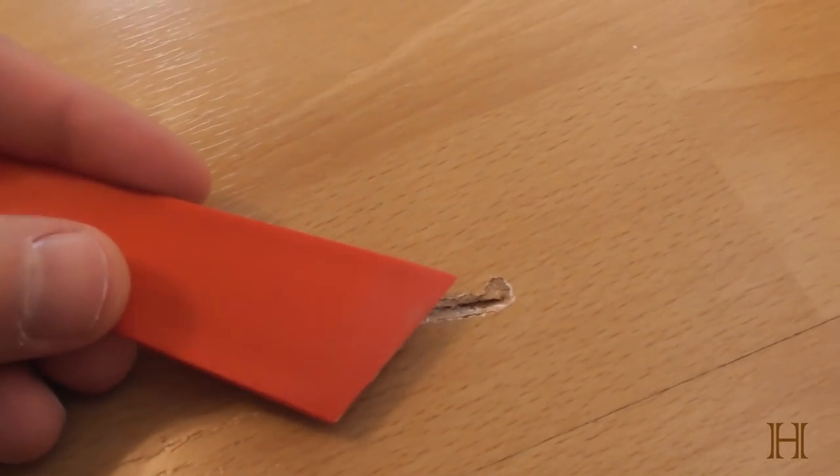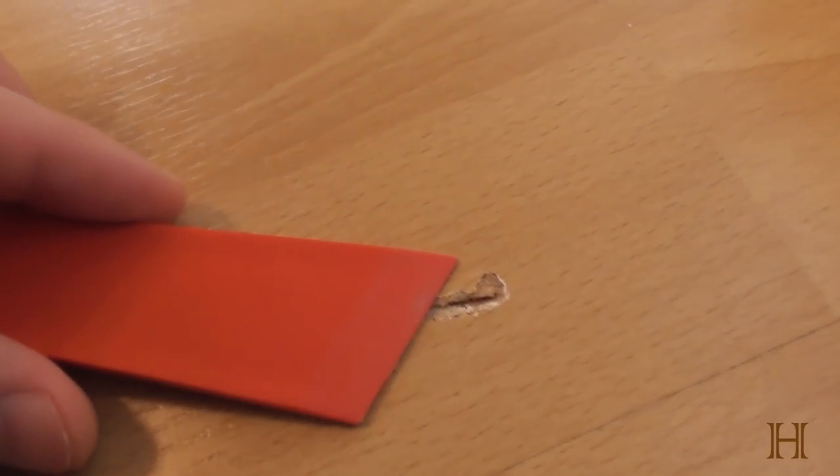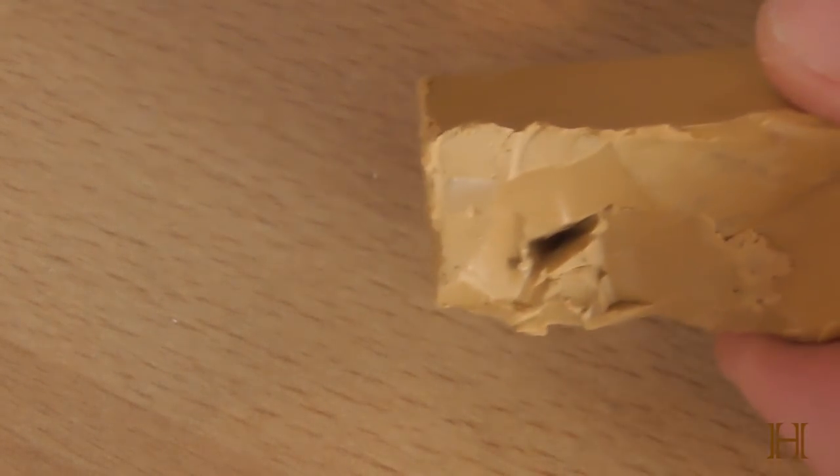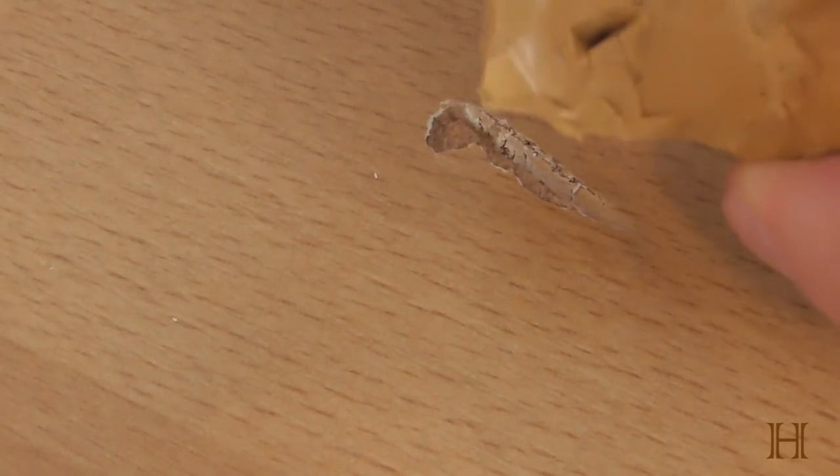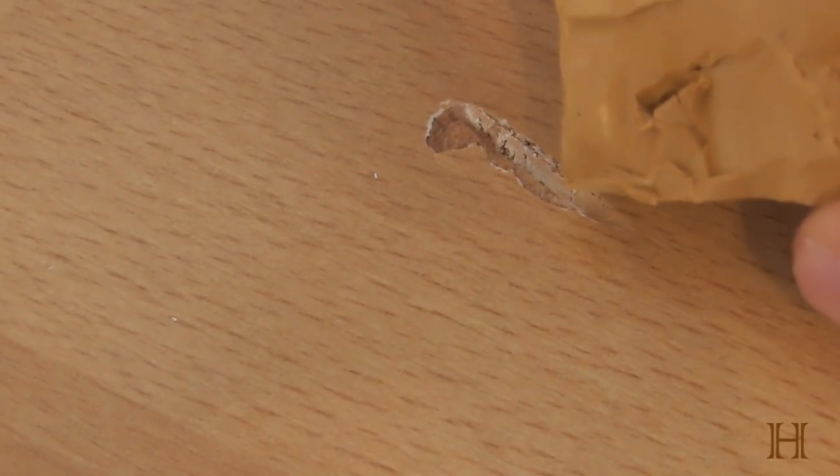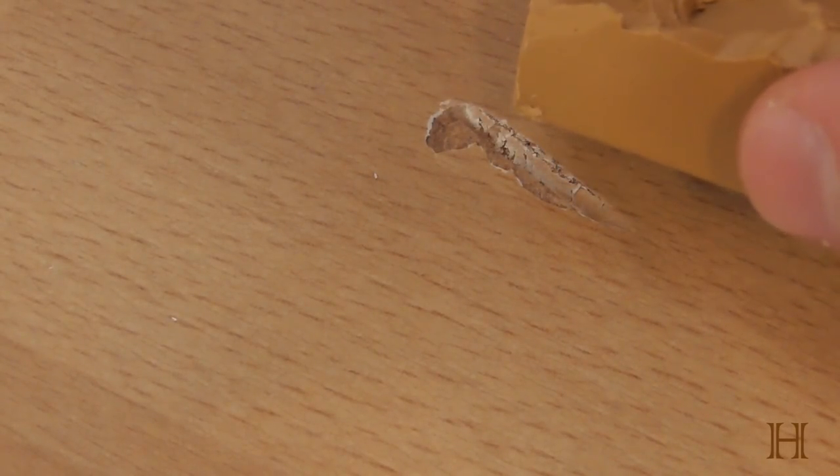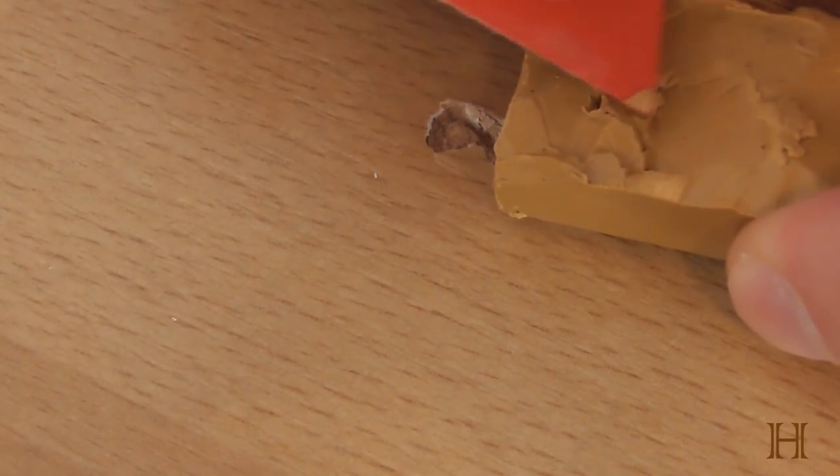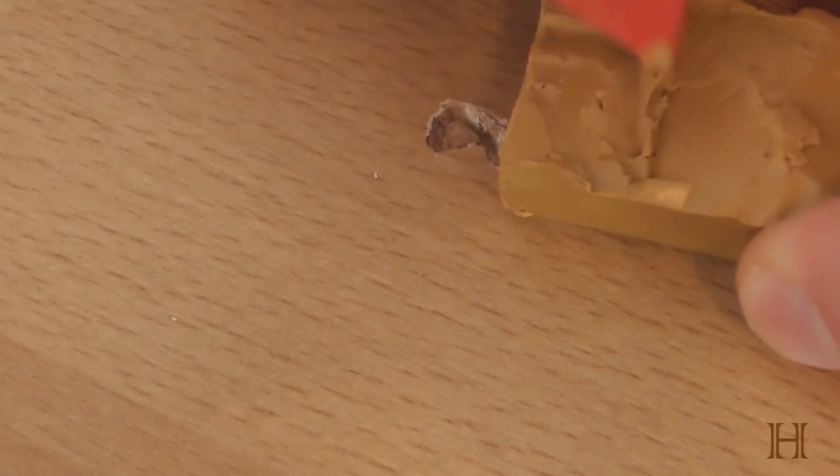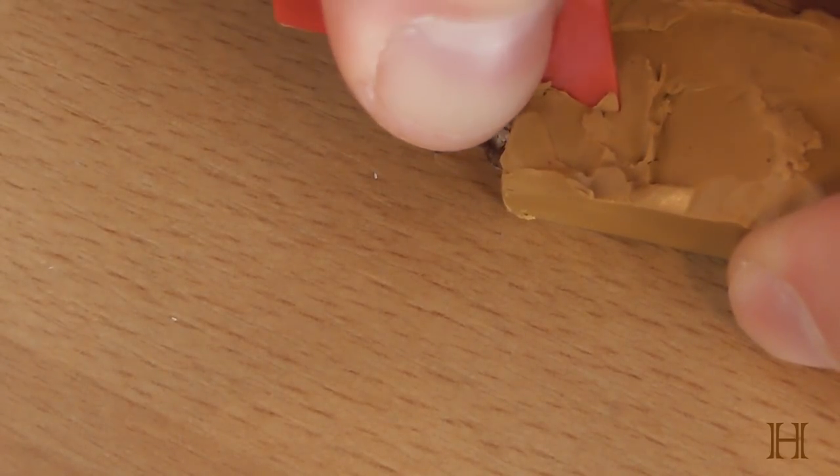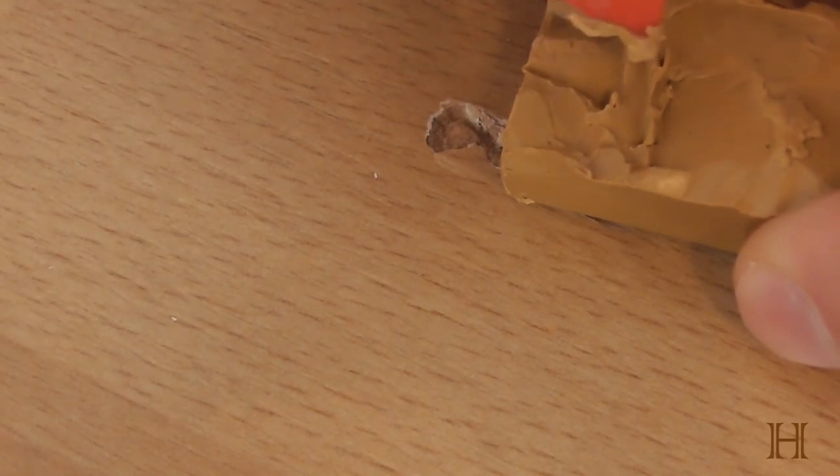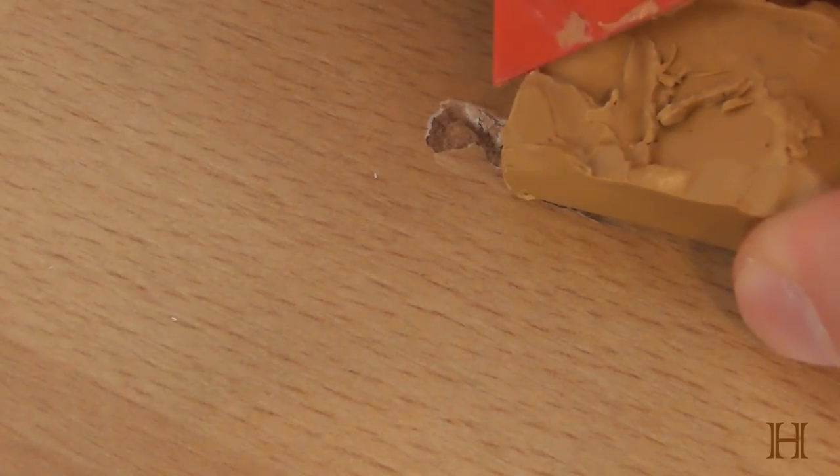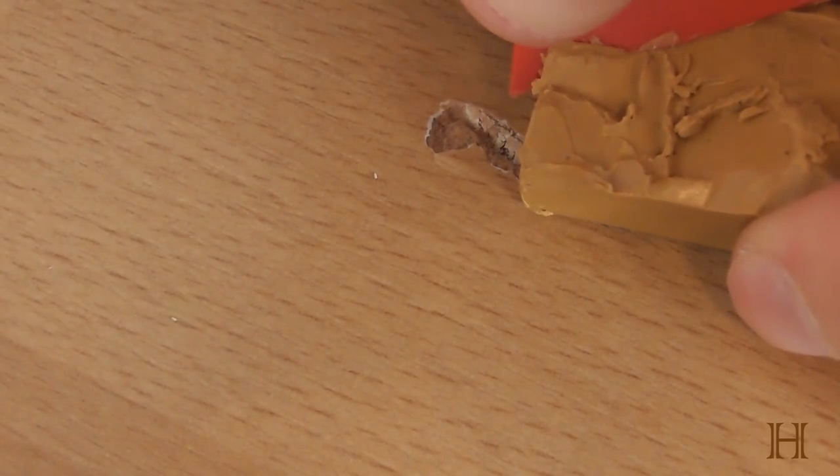Let's see how this works and how it turns out. Now this is the color stick that I'm going to be using that most closely matches the color of the laminate floor that I have. As you can see, I had it on the radiator, so if I push into it, you can see that it's a waxy type.